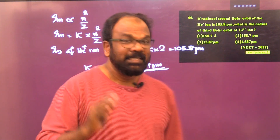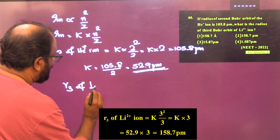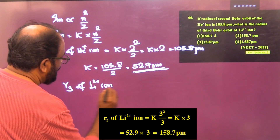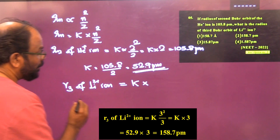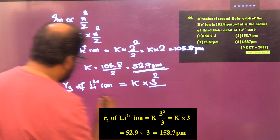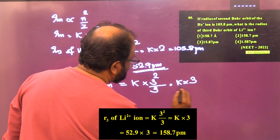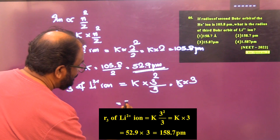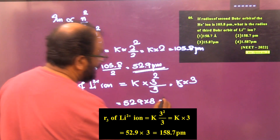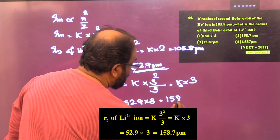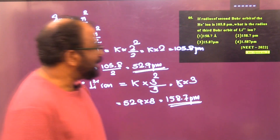Now we calculate the radius of the third Bohr's orbit of the Li2+ ion: r3 of Li2+ = k × 3² / 3 = k × 3 = 52.9 × 3 = 158.7 picometer. So the answer is option number two.